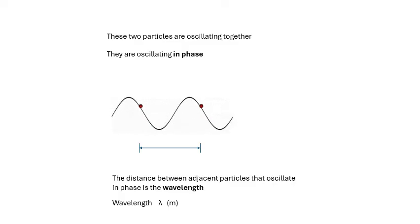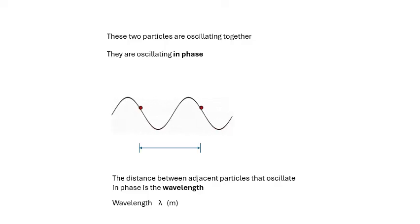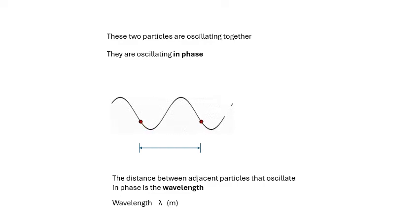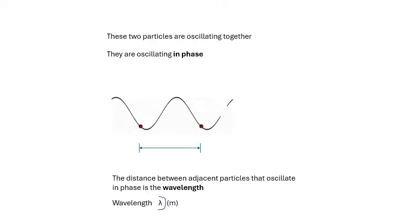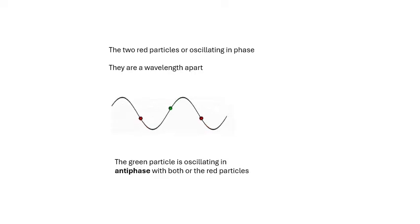Look at these two red particles in the animation — they oscillate together, going up and down in sync. We say they are in phase. The distance between particles that oscillate in phase is the wavelength. The definition: the distance between adjacent particles that oscillate in phase is the wavelength, represented by the Greek letter lambda (λ).